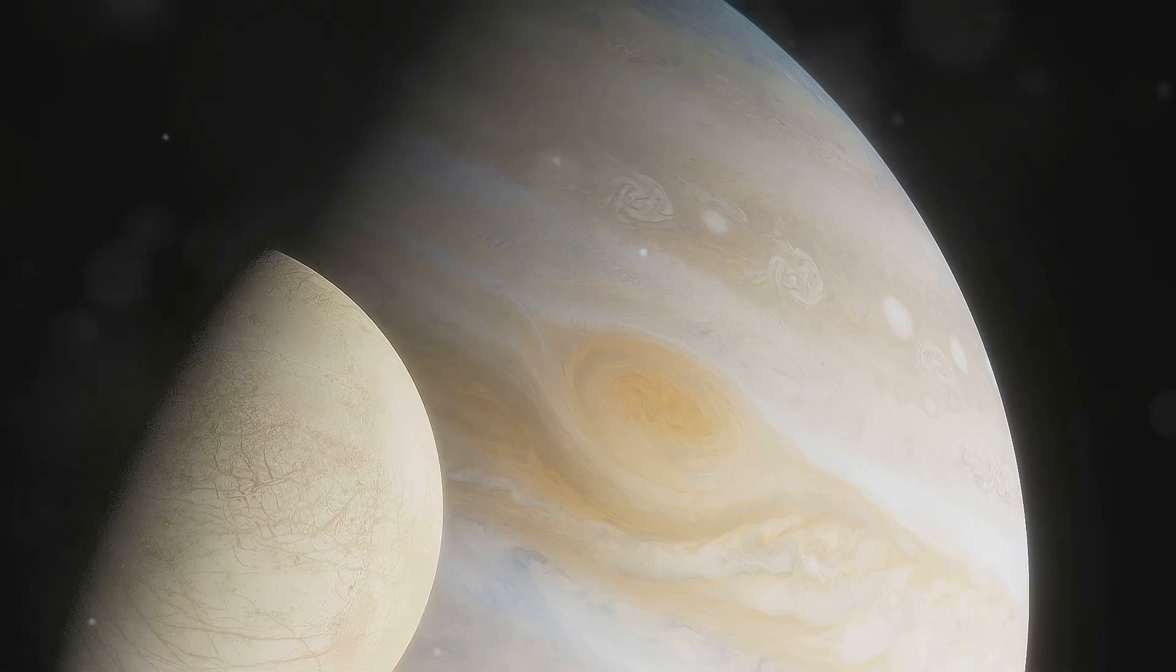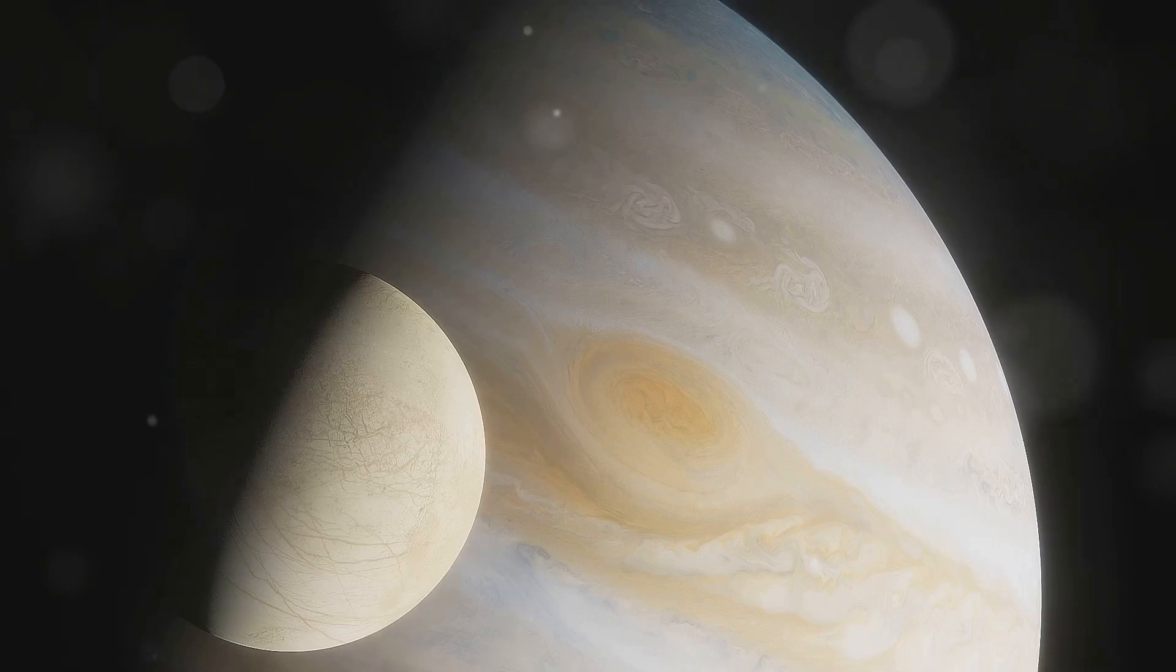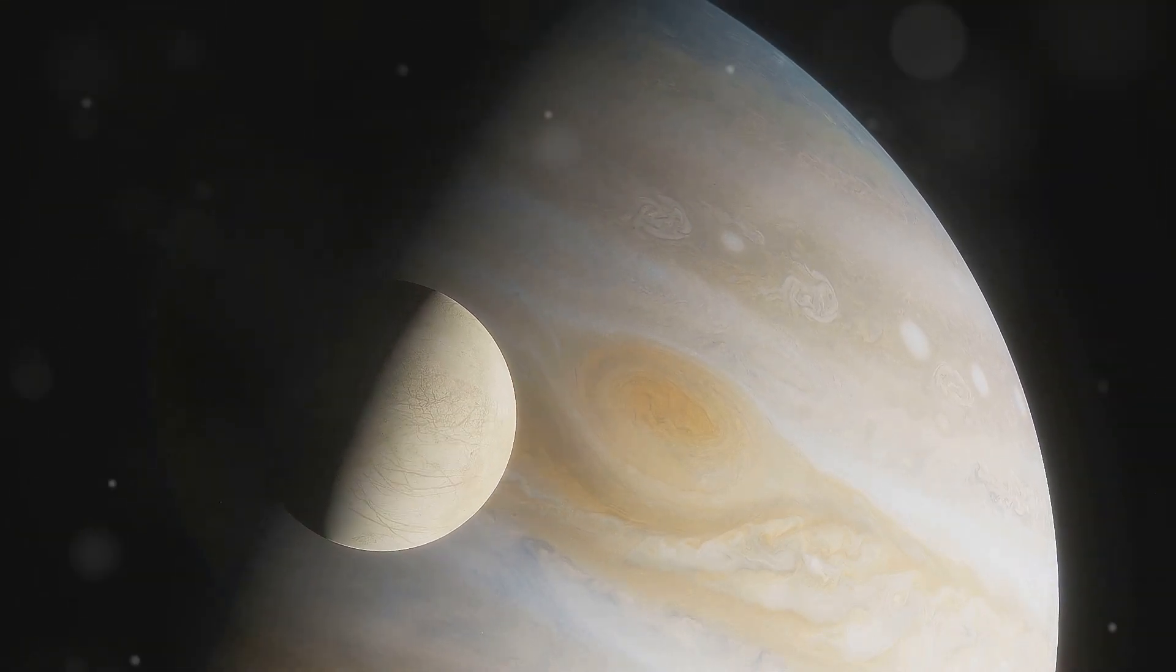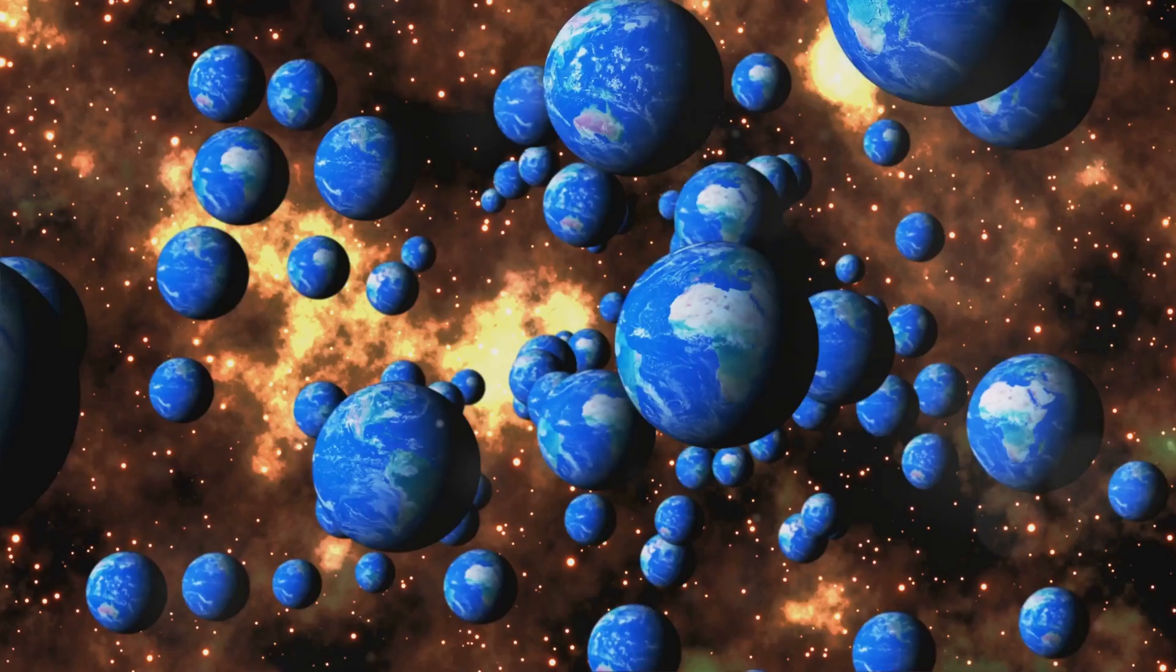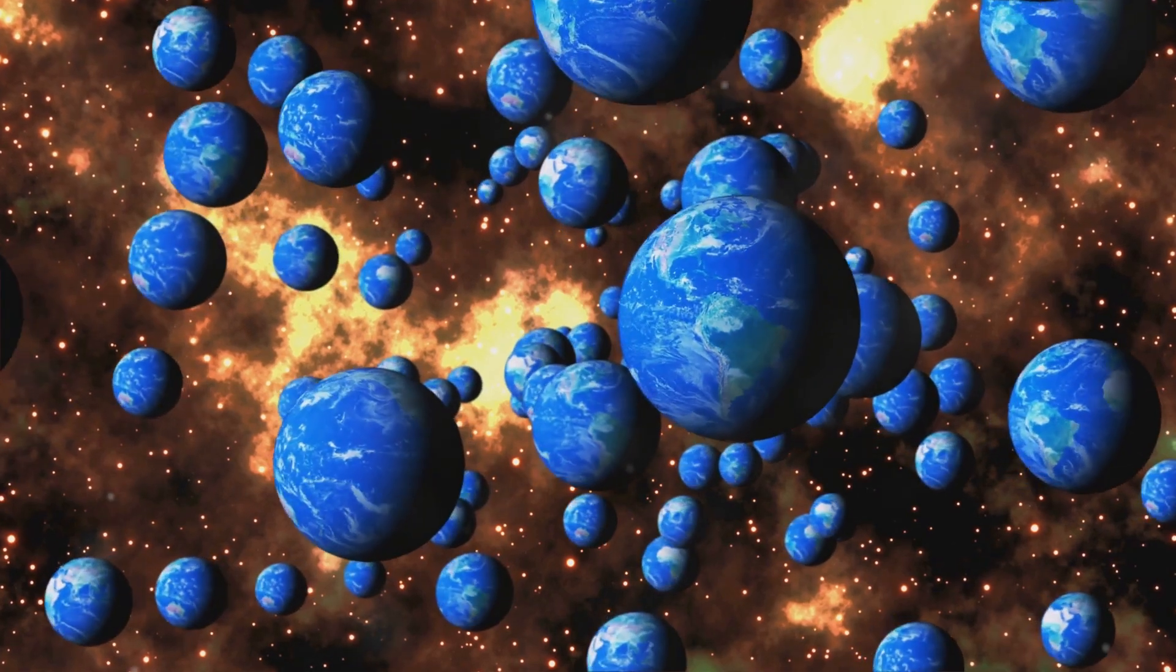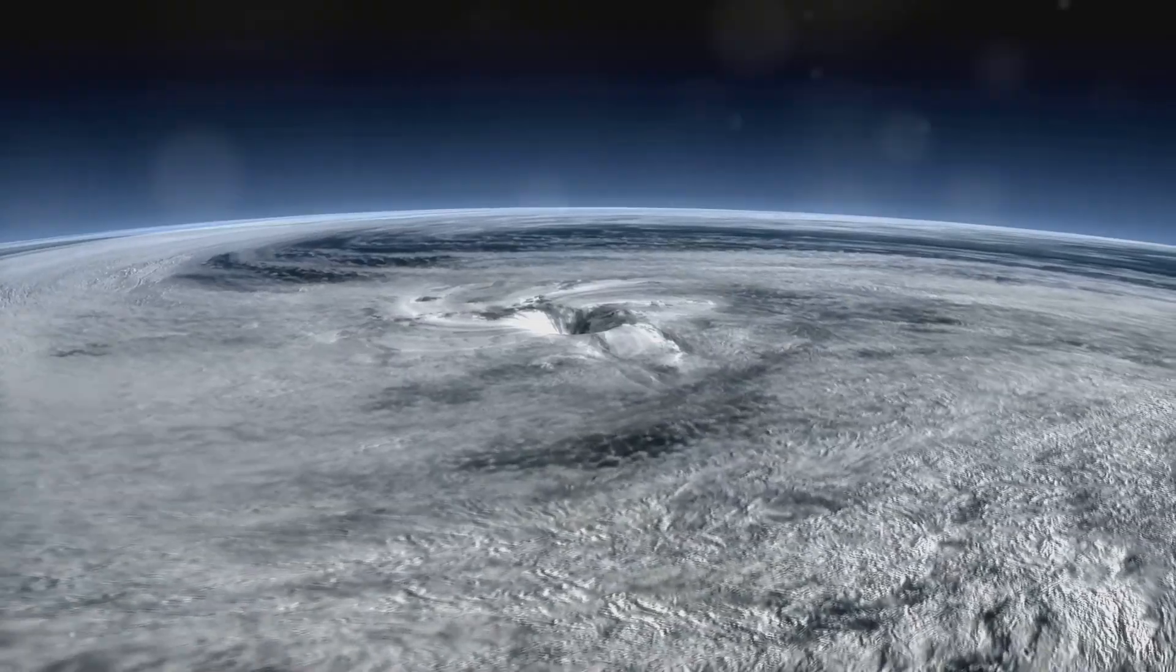Next, we travel to HD 189733b, a gas giant located 63 light-years away in the constellation Vulpecula. This planet is a beautiful azure blue, similar to Earth, but don't let its looks deceive you.